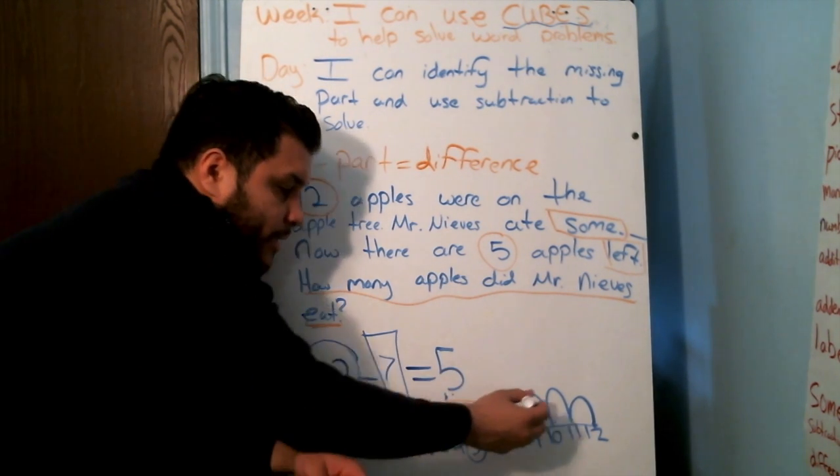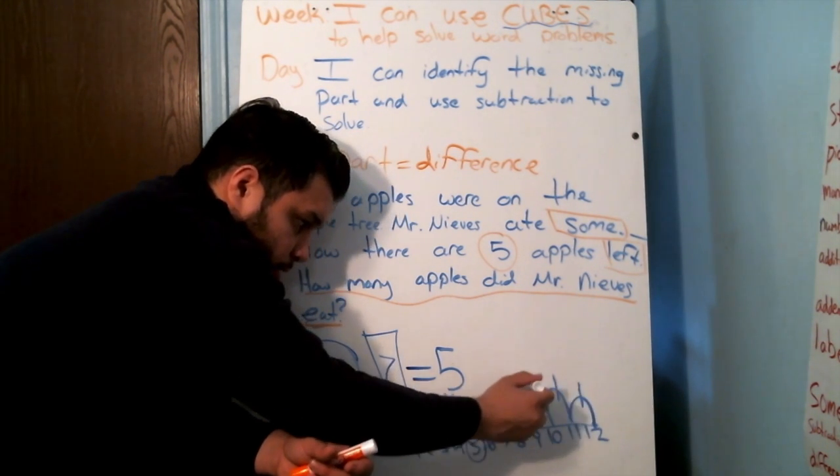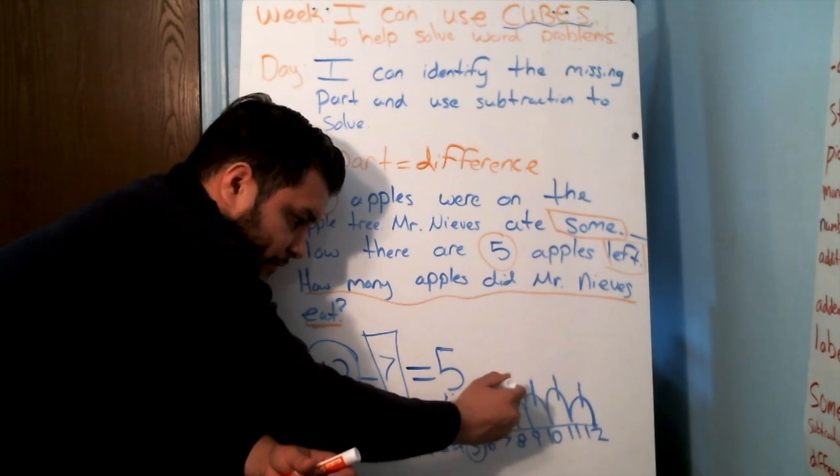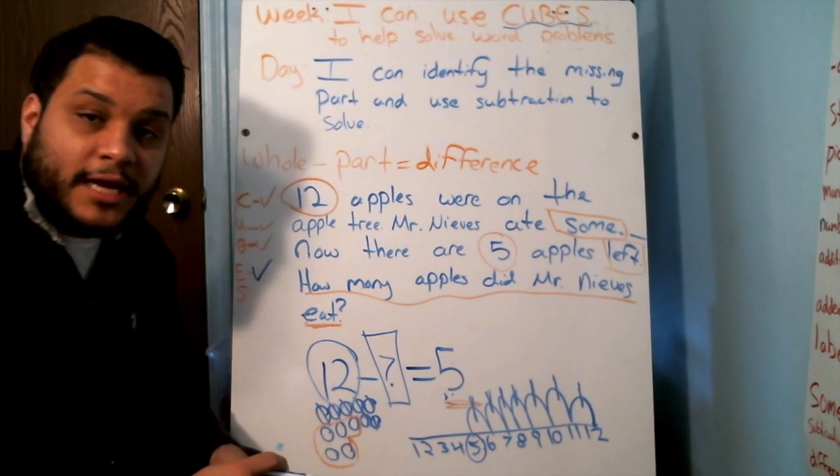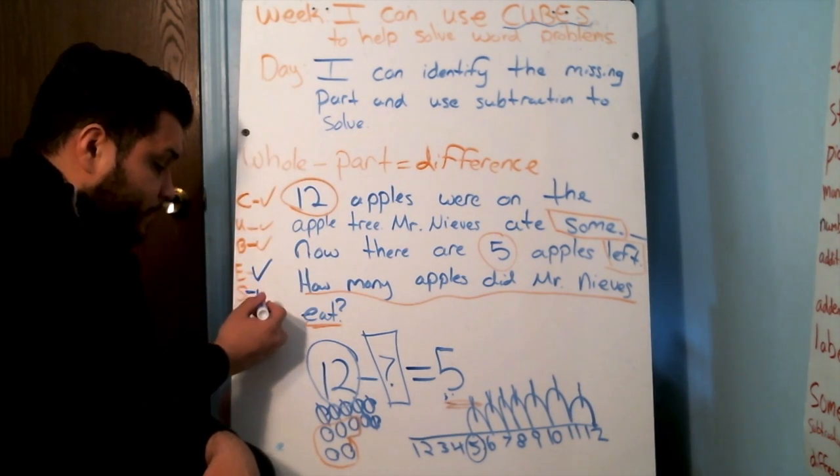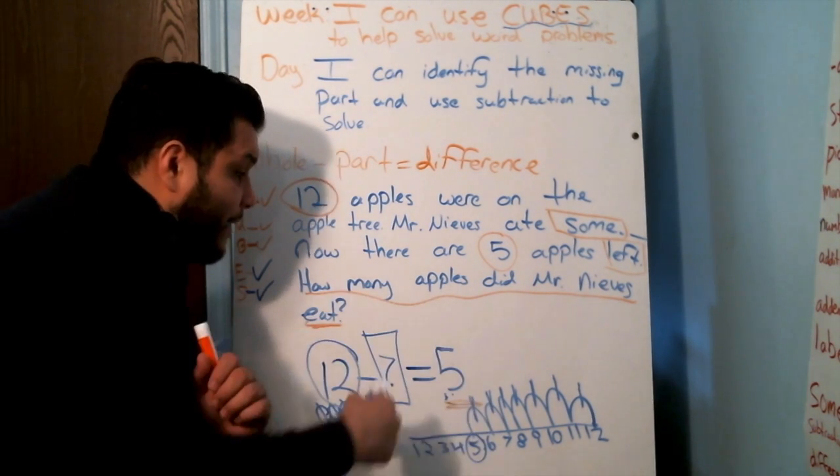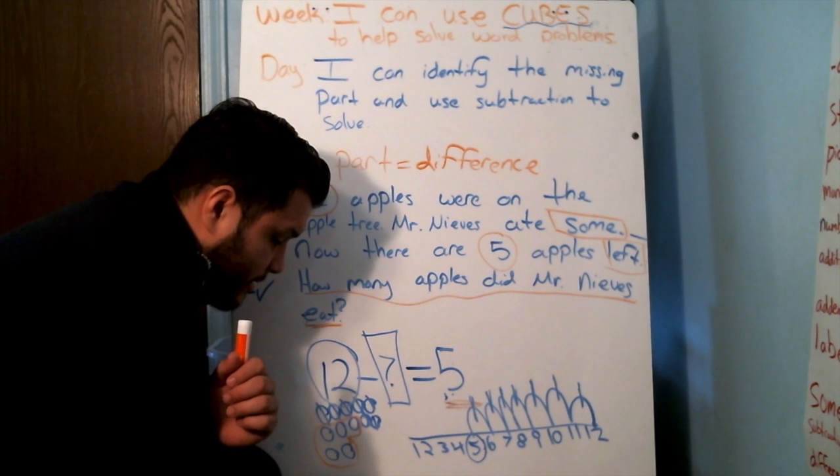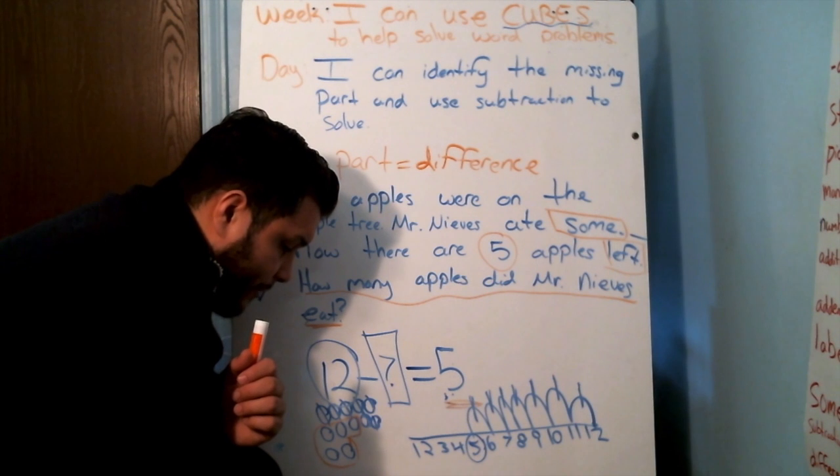Now, let me cross out my mountaintops and see how much I moved by. 1, 2, 3, 4, 5, 6, 7. Does 7 equal 7? It is the same number. Did I solve my work? Yes, I did. Now, I'm going to answer my question. How many apples did Mr. Nieves eat? How many apples did I eat? 7 apples.